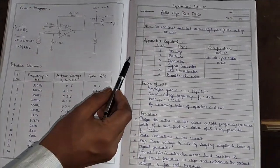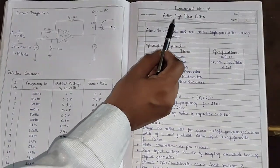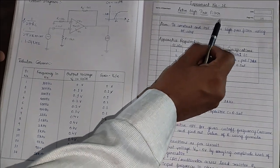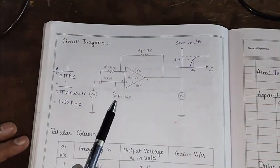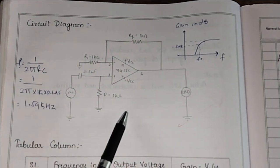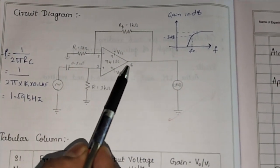In this video I will explain how to perform active high pass filter using op-amp IC741. This is the circuit of active high pass filter. It consists of op-amp IC741.